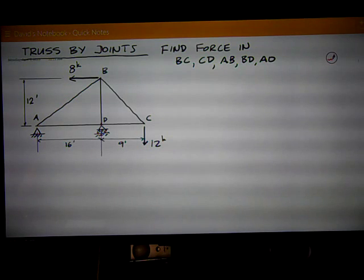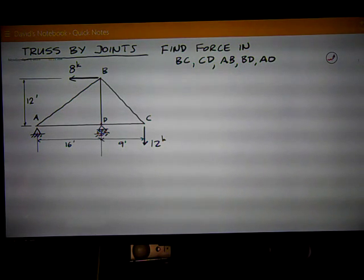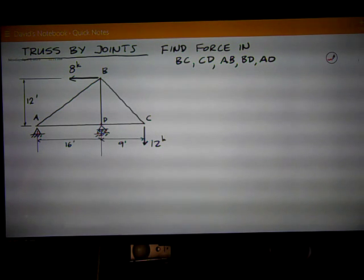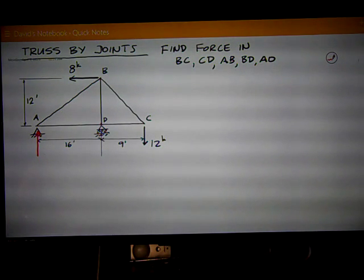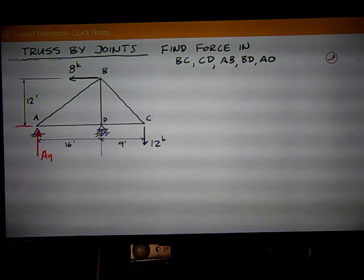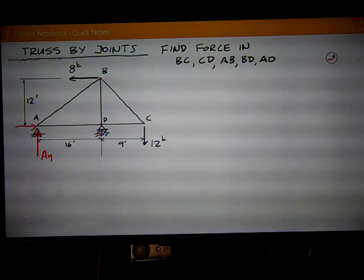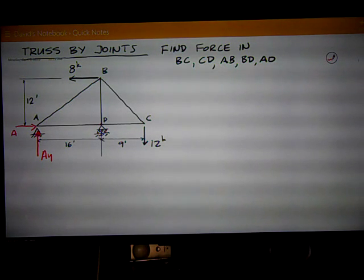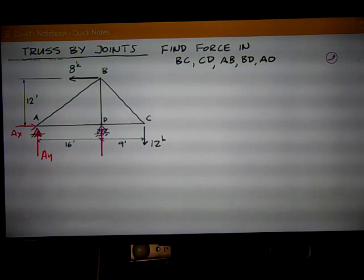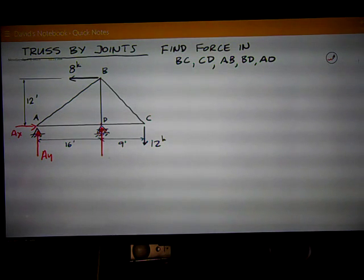So, I'm just going to do a free-body diagram on the truss itself. You should probably draw one on your own. At A, I've got a pin, so I've got an AY and an AX reaction that I usually assume in those directions, positive up and to the right. At D, I've got a roller, so I've just got a vertical reaction, DY.